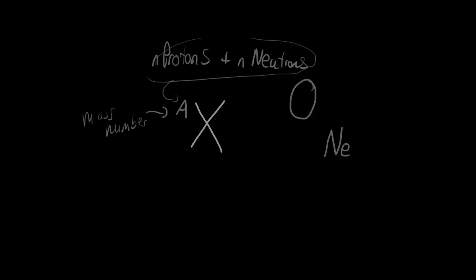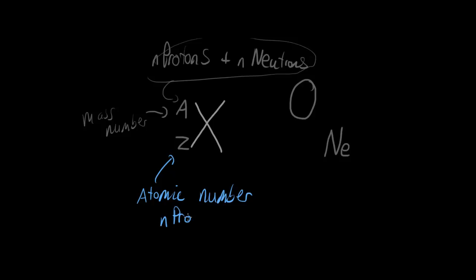We also have another symbol which is down here — a Z — and that Z is basically the atomic number. The atomic number basically represents the number of protons. The mass number is also known as the nucleon number, and the atomic number is also known as the proton number.